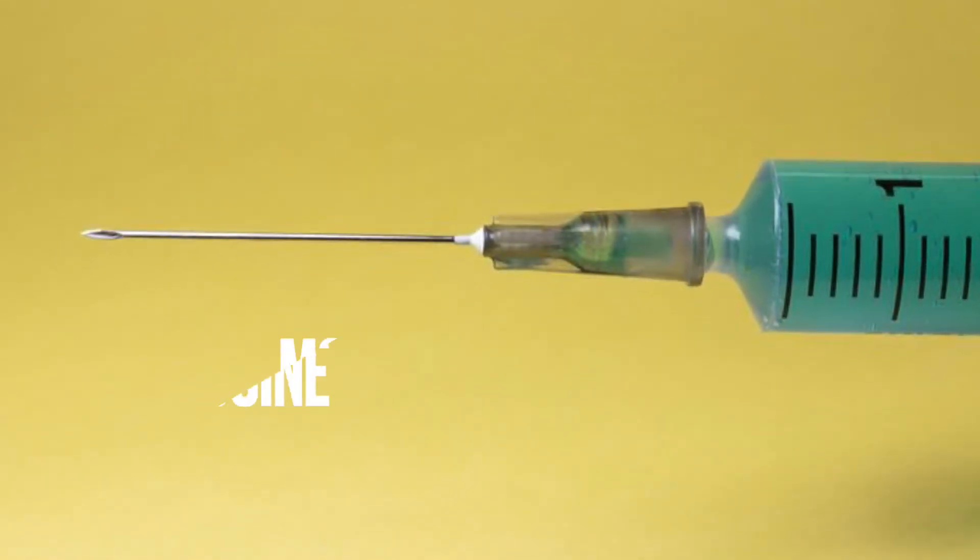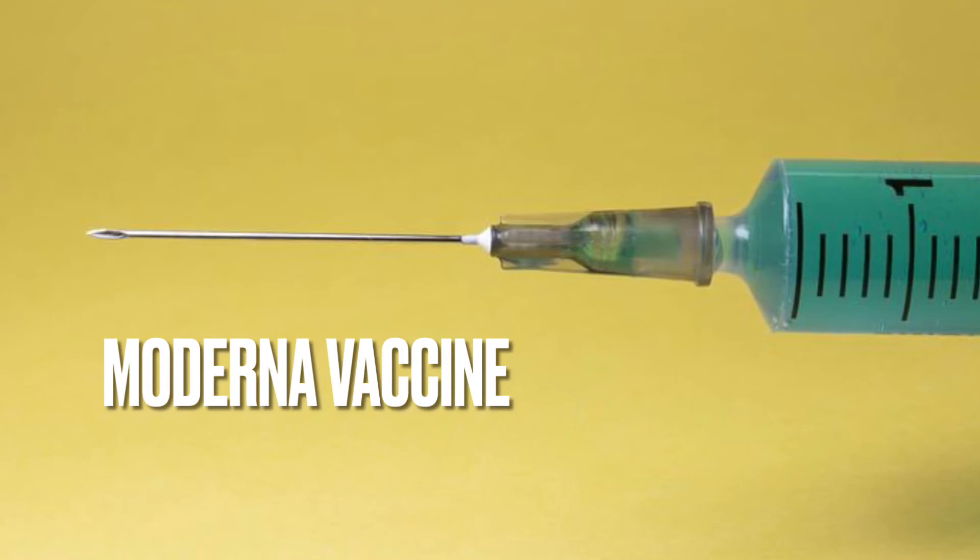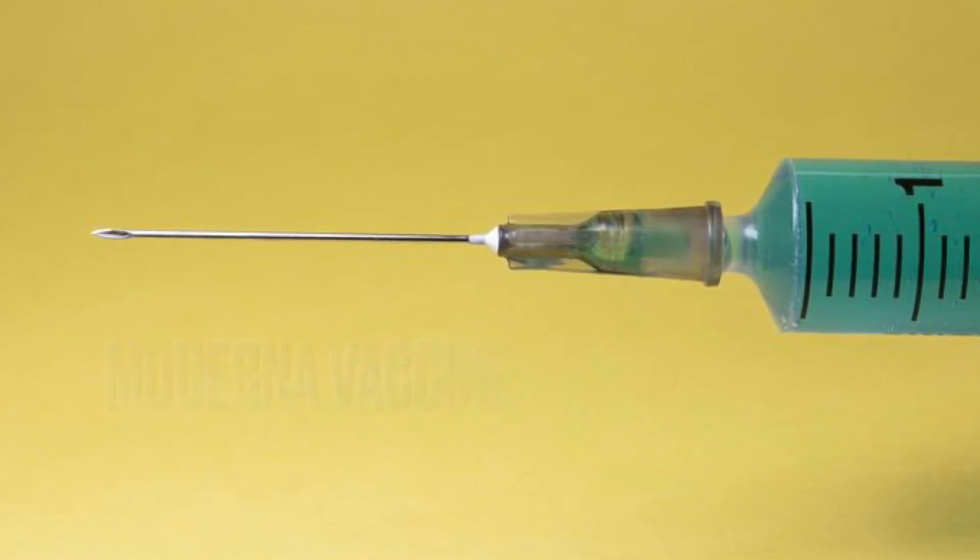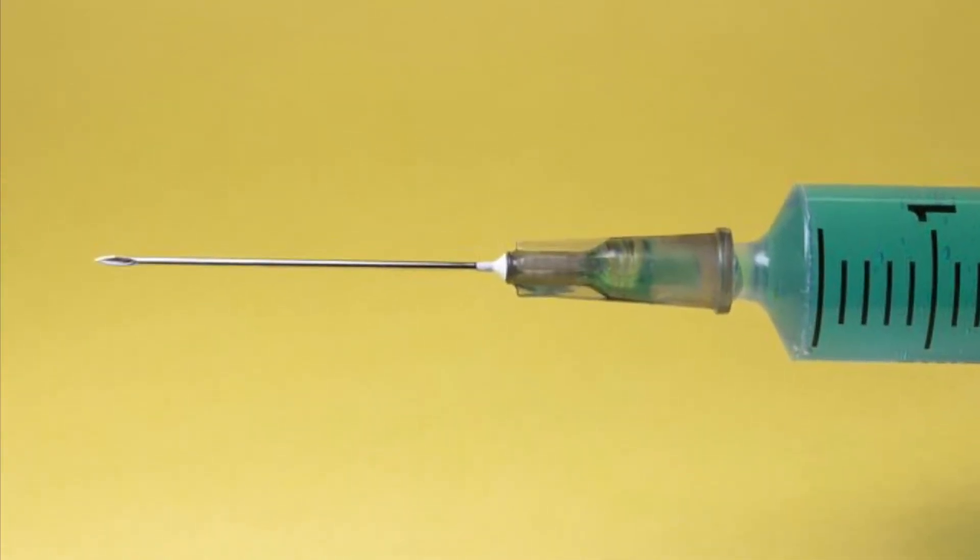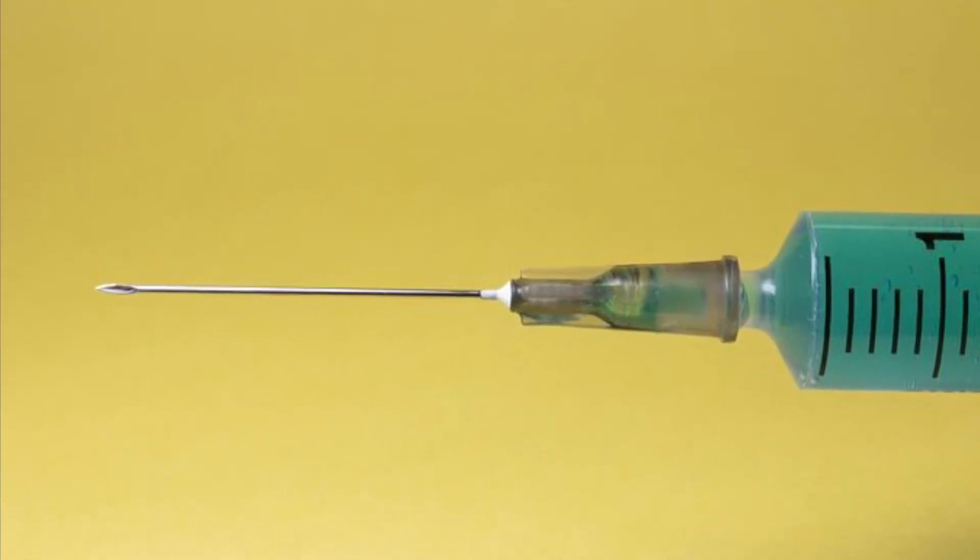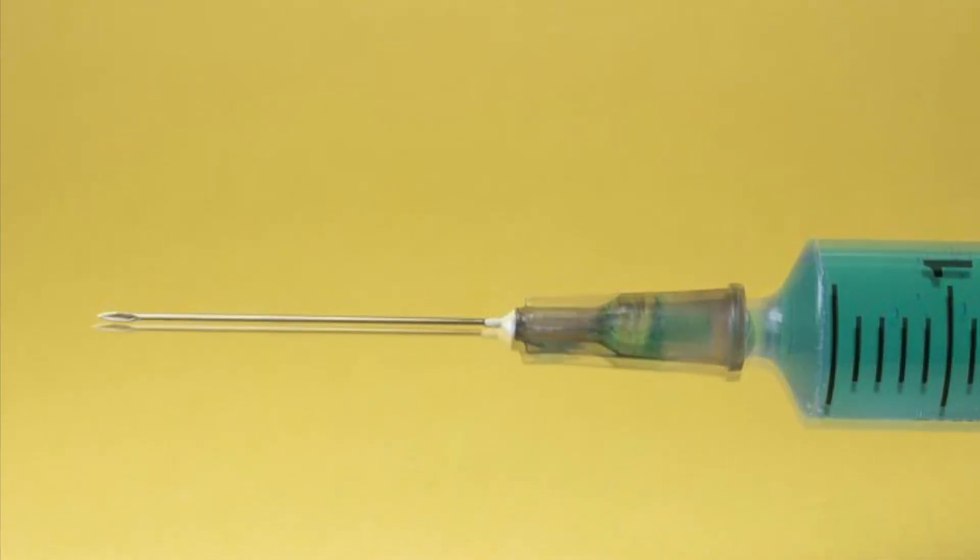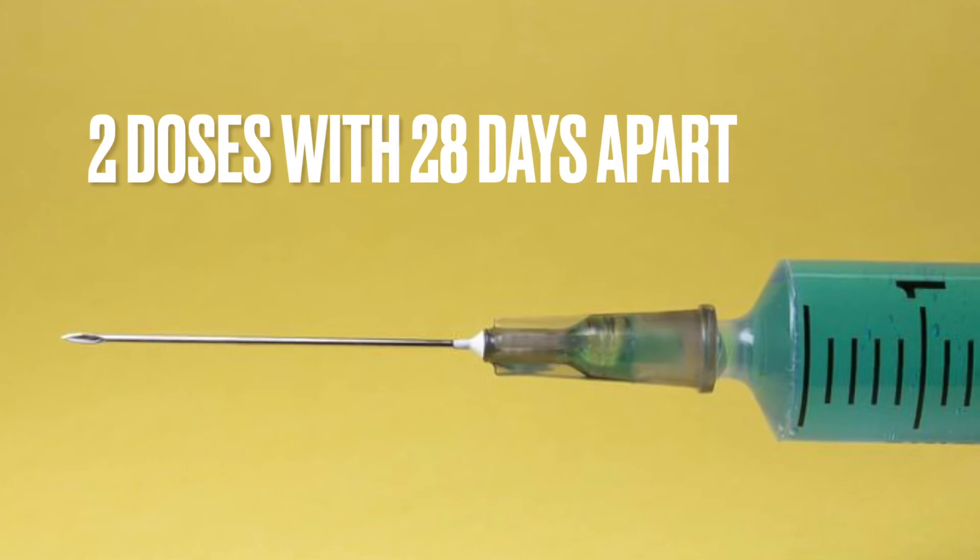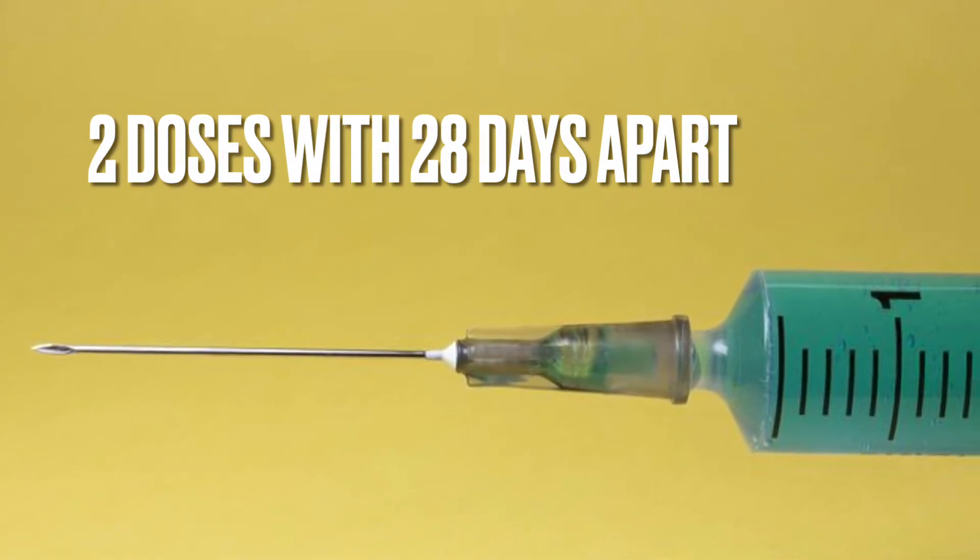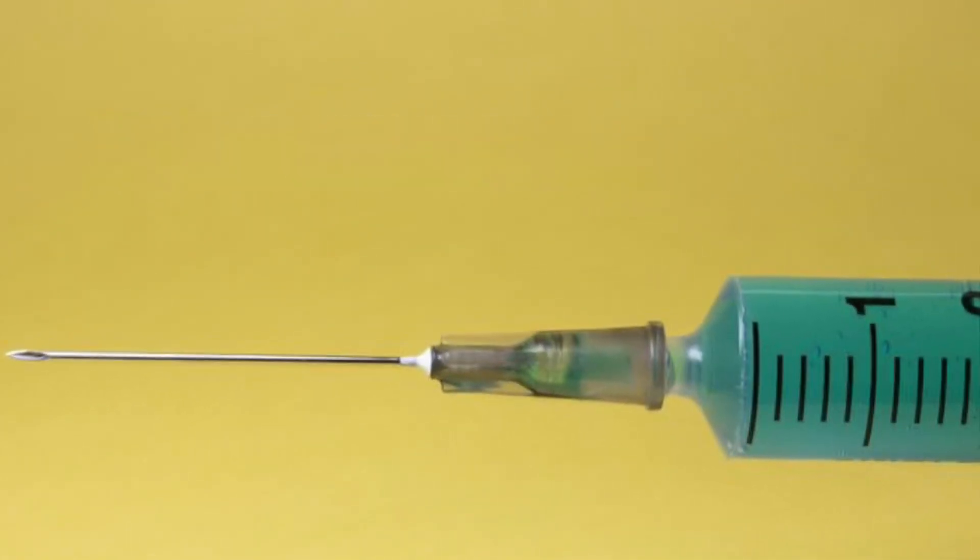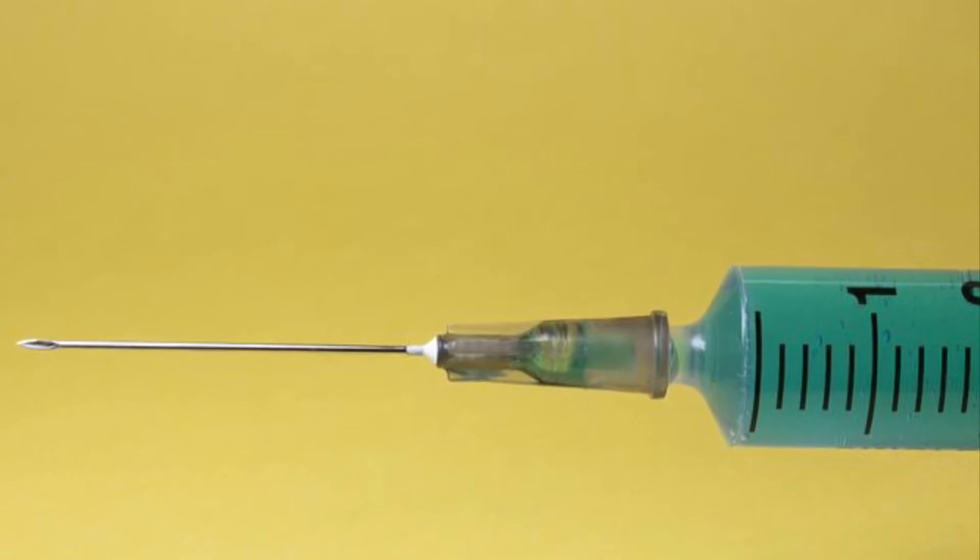The second vaccine is the Moderna vaccine, an mRNA vaccine like the Pfizer vaccine. It is 94% effective, preventing the COVID-19 virus with symptoms. Like the Pfizer vaccine, Moderna also requires two doses with 28 days apart, and there is some protection detected after the first dose.